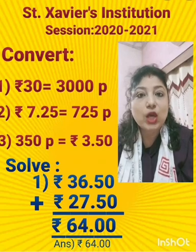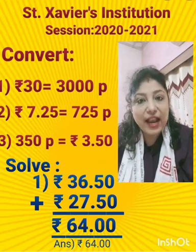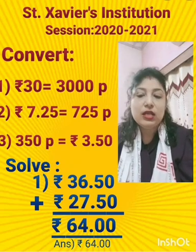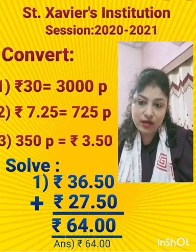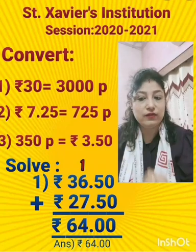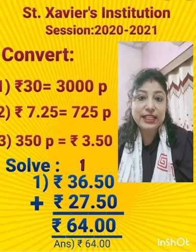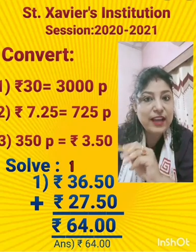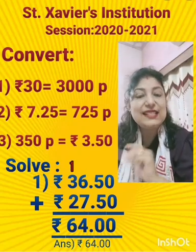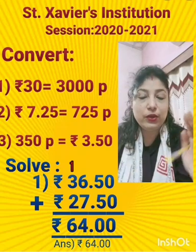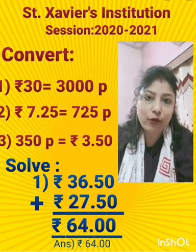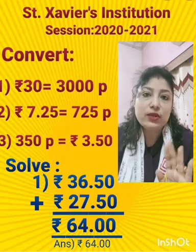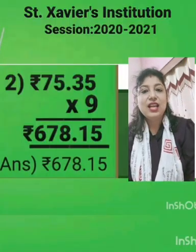Next question: Rupees 36.50 plus rupees 27.50. So 0 plus 0 is 0. 5 plus 5 is 10 — write 0 here, 1 carried over. 7 plus 6 is 13, plus 1 is 14 — write 4 here, 1 carried over. 3 plus 2 is 5, plus 1 is 6. So we will get rupees 64.00.